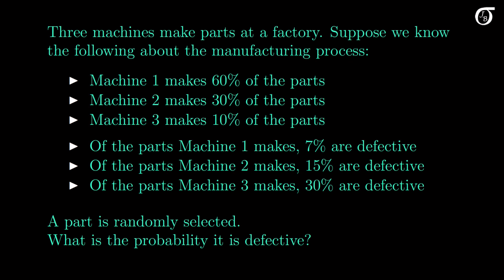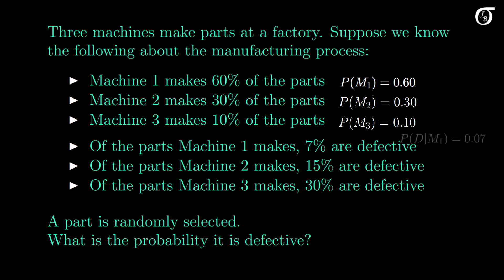If a part is randomly selected, the probability it came from machine 1 is 0.6, from machine 2 is 0.3, and from machine 3 is 0.1 — letting M1, M2, and M3 represent the part coming from machines 1, 2, and 3 respectively. Note that these are mutually exclusive events that cover the entire sample space; the randomly selected part will come from one and only one of these machines. And we know the conditional probability the part is defective given it came from machine 1 is 0.07, for machine 2 that conditional probability is 0.15, and it's 0.3 for machine 3. Here I'm letting event D represent the event that the randomly selected part is defective.